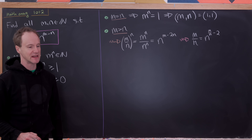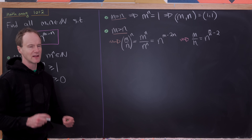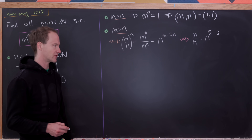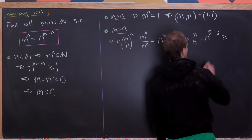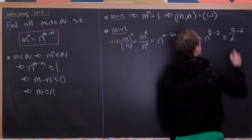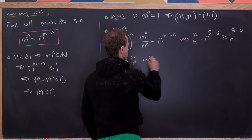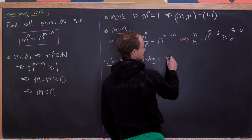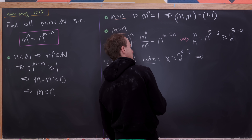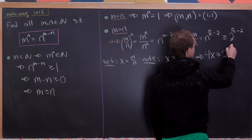We can simplify using an inequality. We can assume n is bigger than or equal to 2, since if n equals 1 then m is necessarily equal to 1. So we can write that m over n is greater than or equal to 2 to the m over n minus 2. Setting x equal to m over n gives us x is bigger than or equal to 2 to the x minus 2. Multiplying both sides by 4, we get 4x is bigger than or equal to 2 to the x.